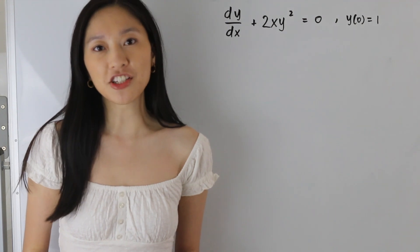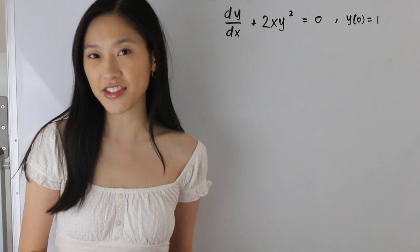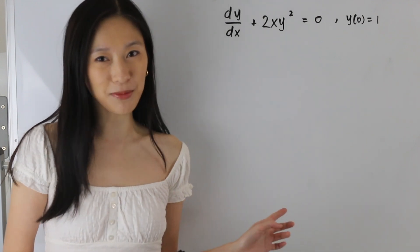So the goal of separation of variables is to get all your x variables on one side and all of your y variables on the other side. Let's go ahead and take a look at this example here.